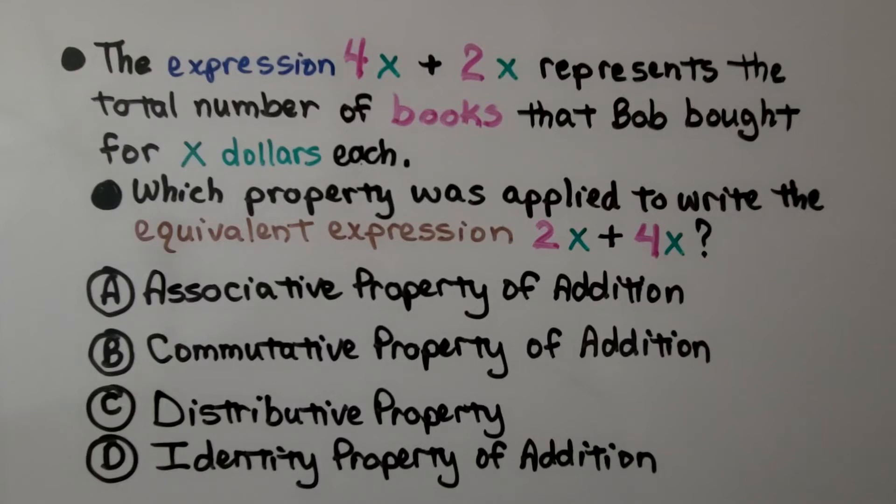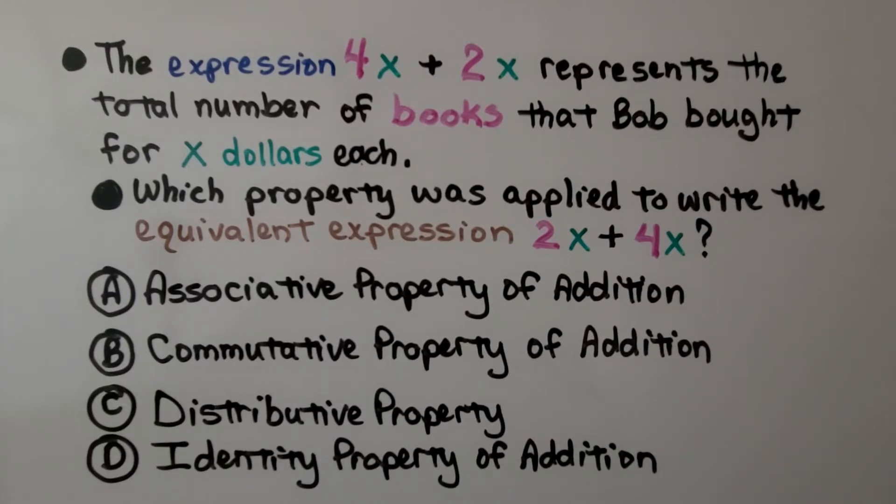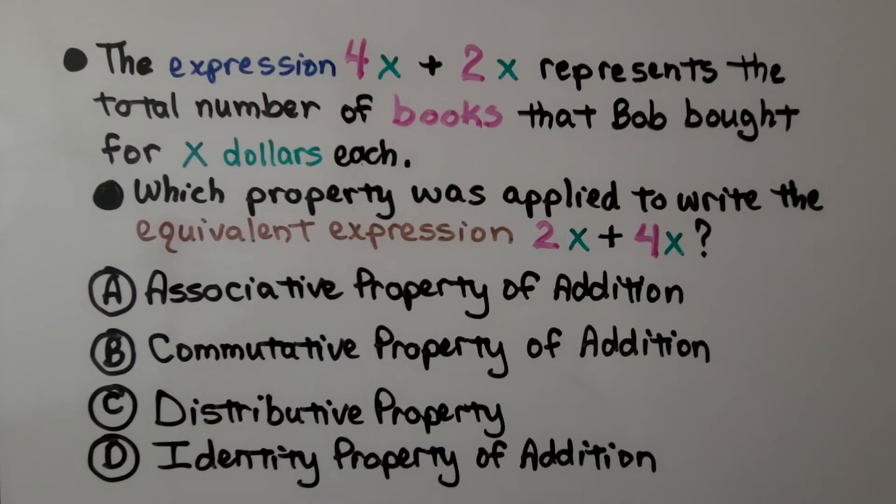The expression 4x plus 2x represents the total number of books that Bob bought for x dollars each. So he bought 4 books for x dollars and 2 books for x dollars. So which property was applied to write the equivalent expression 2x plus 4x?